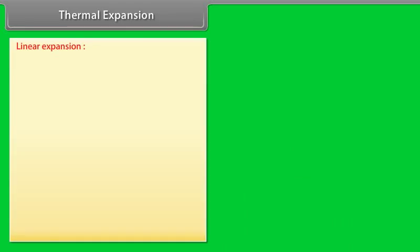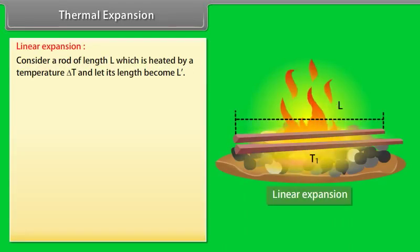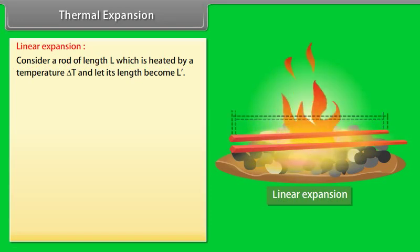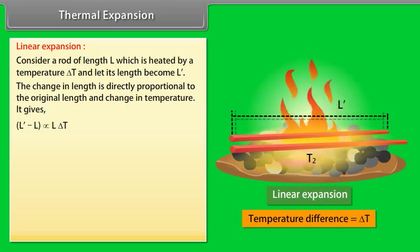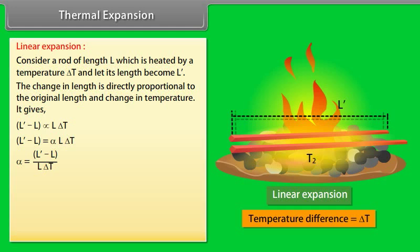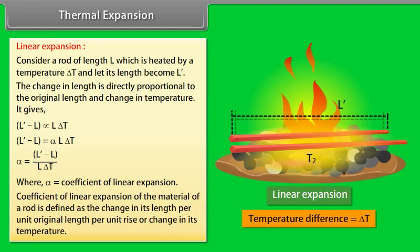Linear expansion: Consider a rod of length L which is heated by a temperature delta T, and let its length become L'. The change in length is directly proportional to the original length and change in temperature. It gives L' − L = αL·ΔT. The value of alpha is equal to (L' − L)/(L·ΔT), where alpha is the coefficient of linear expansion, defined as the change in length per unit original length per unit rise or change in temperature.